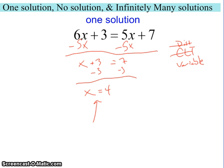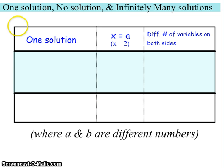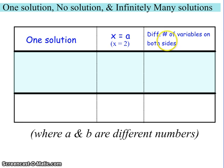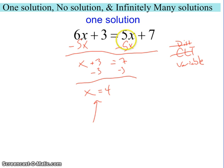This is a case of one solution because we have our unknown x equaling a single value. In a general sense, if we have one solution, we're going to have x equal a single number — for example, x equals 2. There's a number that our x is going to equal. One of the key things we noted was that we had a different number of variables on both sides: on one side we had a coefficient of 6, and on the other side we had 5.